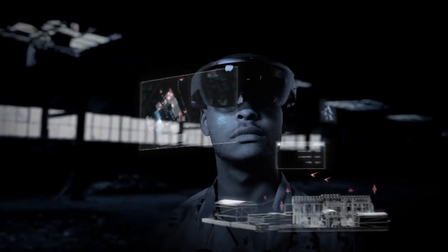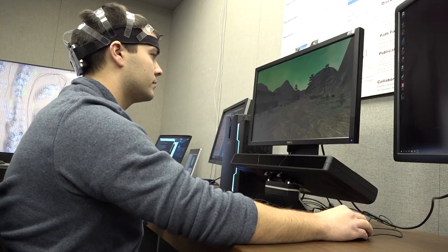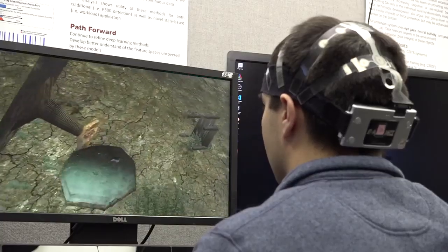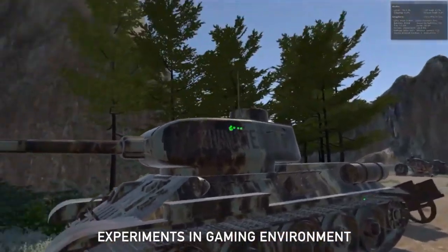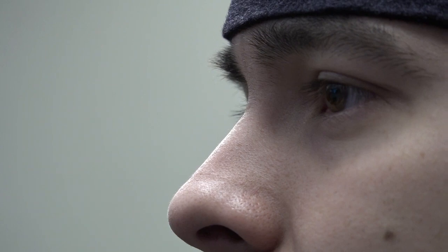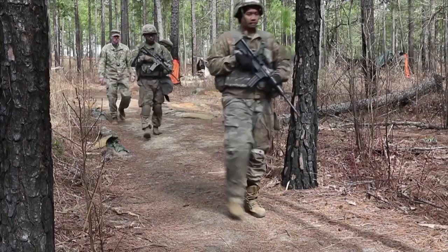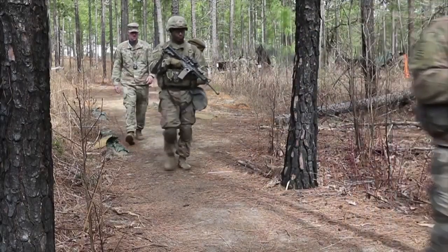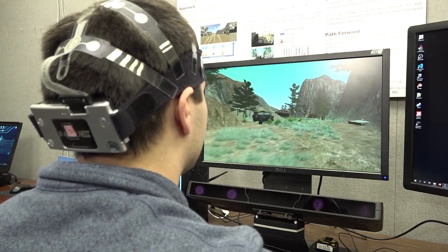Have you ever wanted to get inside a soldier's head? ARMY researchers have developed a human interest detector that can determine where people are looking and decode their brain activity. Researchers track neural responses and assess what captures a soldier's attention in threat environments. This will lead to better situational awareness on the battlefield, enable commanders to make better decisions, and ultimately improve the ability of the soldier to team with future AI agents.